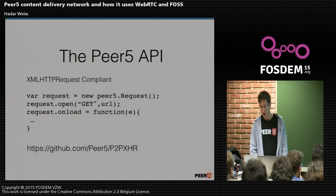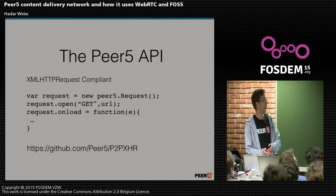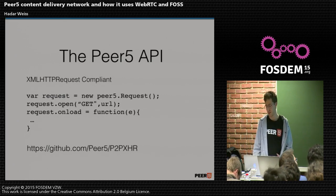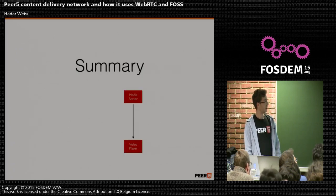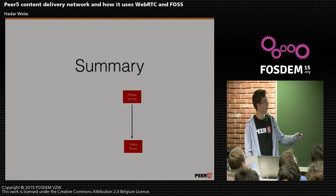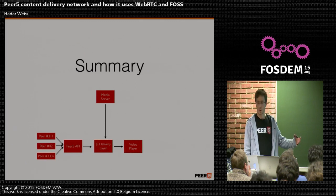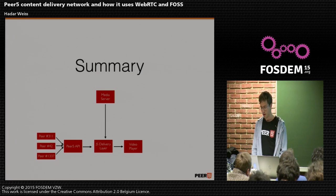We decided to go with an API that is very similar to XHR — actually, it is compatible with XHR. So we can bake our API into Dash.js and other JavaScript-based technologies. You can check it out on GitHub. To sum things up, we want to move from the native delivery model to a JavaScript-based delivery model, and then we can hook in and do delivery even in complex media use cases.